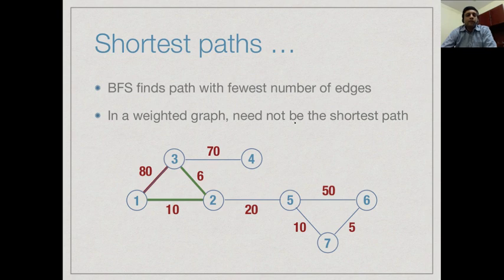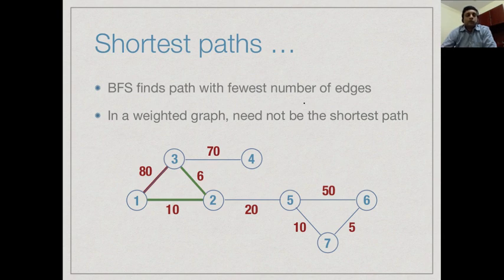Breadth-first search solves the shortest path problem when cost equals number of edges — that is, each edge has the same cost so total cost is proportional to edges traversed. But if costs can be arbitrary, BFS does not work. For instance, between vertices 1 and 3 there is a direct edge with weight 80, but a shorter-cost path goes via vertex 2: two edges but total cost only 10 plus 6, which is 16. The shortest path in a weighted graph need not be shortest in terms of number of edges; we are talking about the sum of costs along edges.